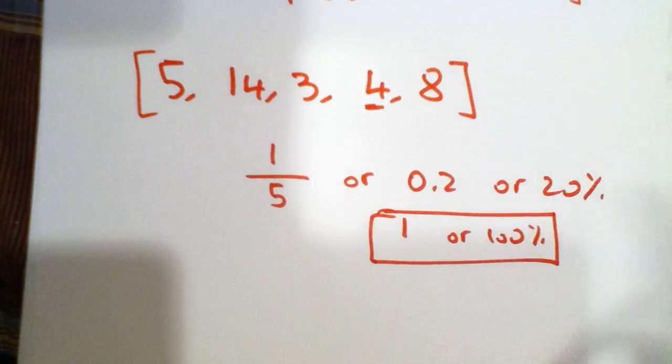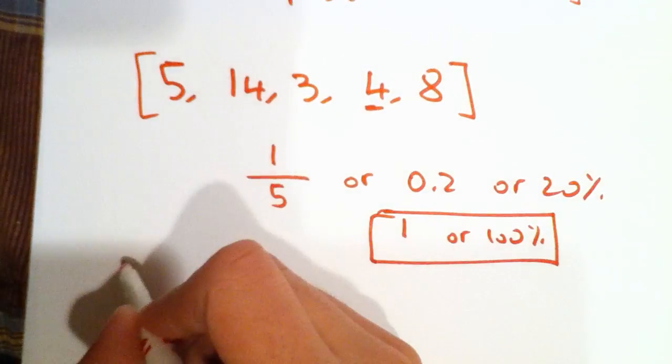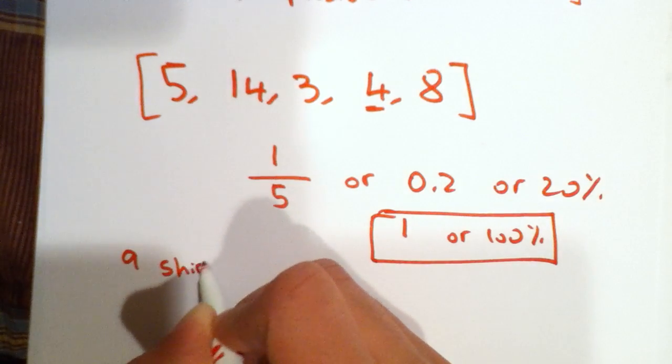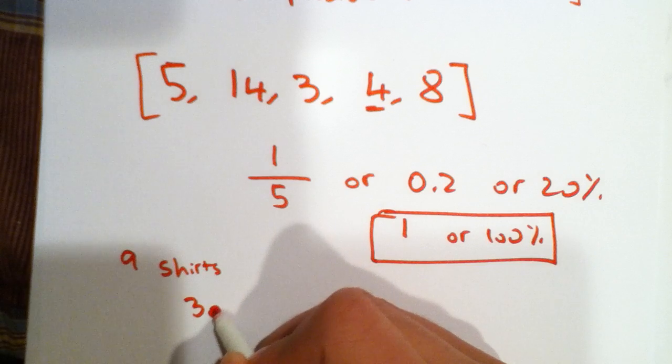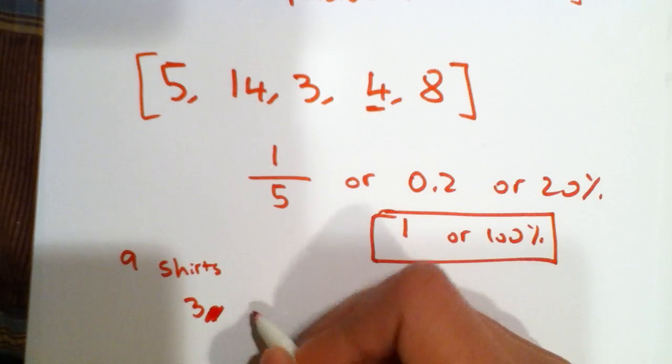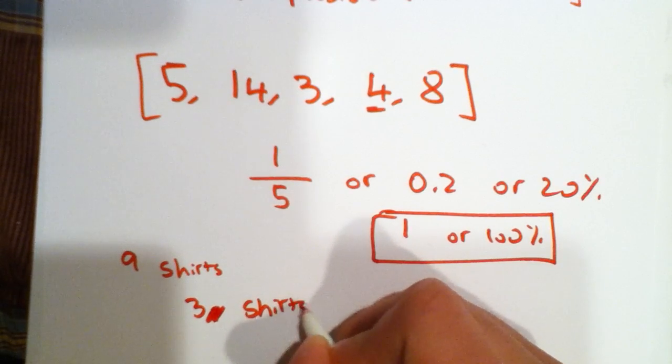So let's try another example. We have 9 shirts and 3 of them, 3 shirts are red.